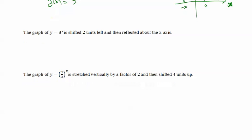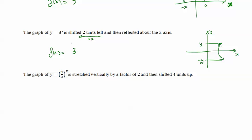Next, the graph of y = 3^x is shifted 2 units left — make sure you add 2 to the exponent, it's always the opposite. Then it's reflected about the x-axis, which means whatever y you have becomes negative y. So the new function f(x) = -3^(x+2), because the negative is applied to the whole y value.